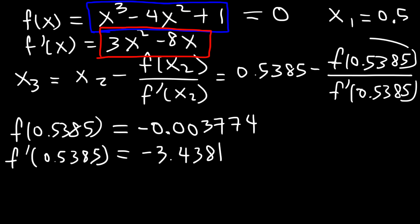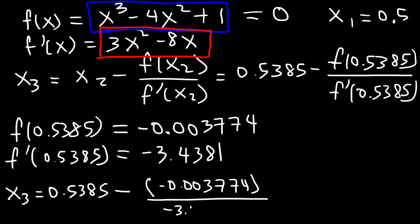So now we can plug these values into that expression. So x3 is going to be 0.5385 minus f of 0.5385, that's negative 0.003774, divided by negative 3.4381. Now, notice that this answer is close to 0. That means x, the solution that we're looking for, where the function has a y value of 0, is close to this number.